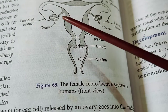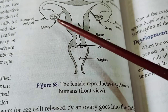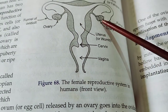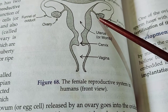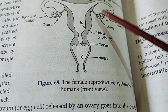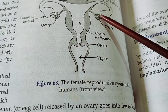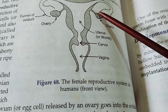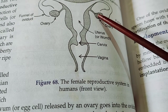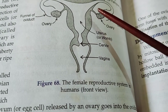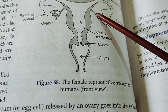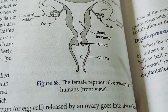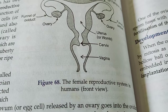The primary function of the ovary is to produce the egg or ovum. It also produces the female reproductive hormones like estrogen and progesterone, which control the expression of the secondary sexual characters in the female body.